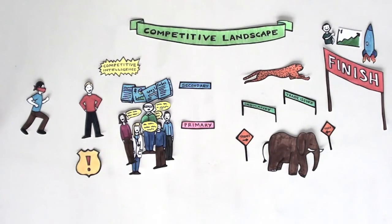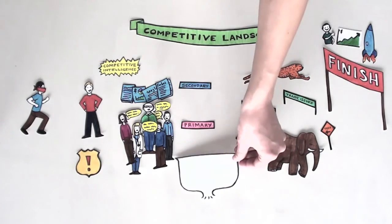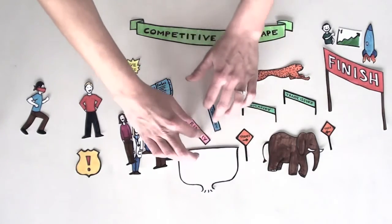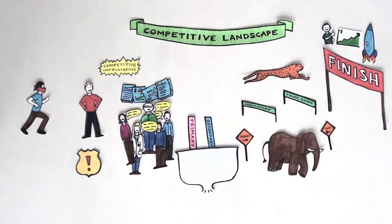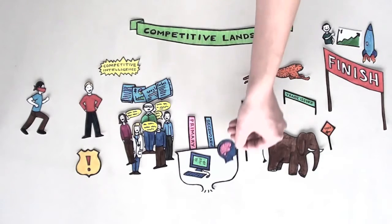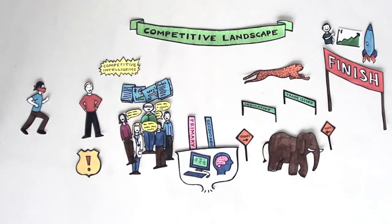Once the primary and secondary information has been gathered, it is then analyzed and processed. The analysis can be supported by different technology applications. But ultimately, it requires the skill and perspective of human analysis to get the most out of the information. The result of this process is competitive intelligence.